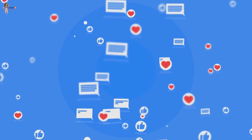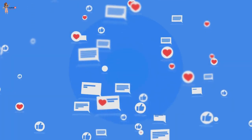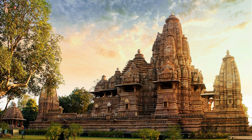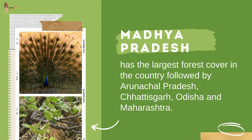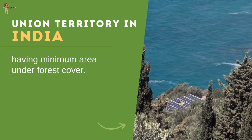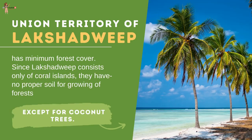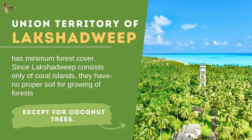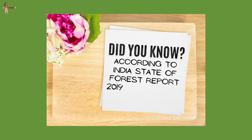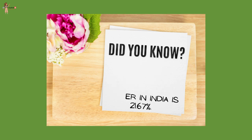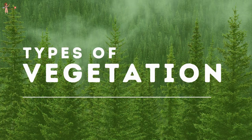Madhya Pradesh, the second largest state in India, has the maximum area under forest cover. Lakshadweep is the union territory having minimum forest cover — it consists only of coral islands and therefore has no proper soil for growing forests except coconut trees. According to the India State of Forest Report 2019, the forest cover in India is just above 21 percent.